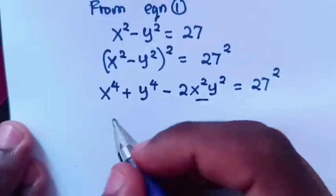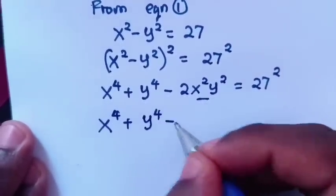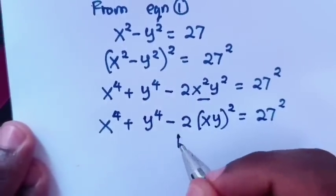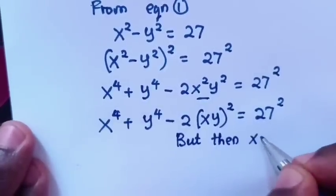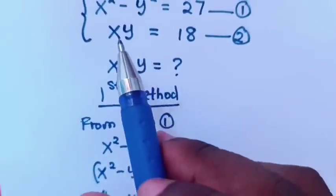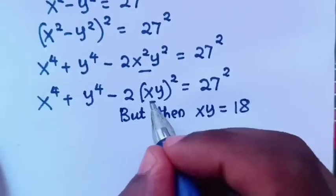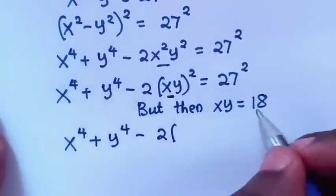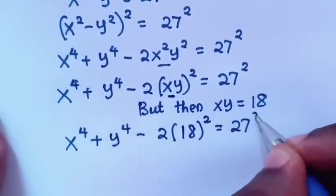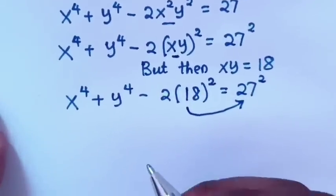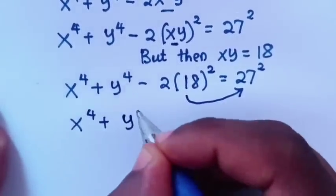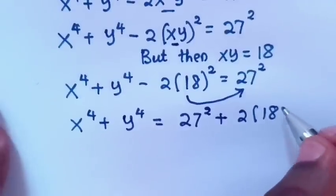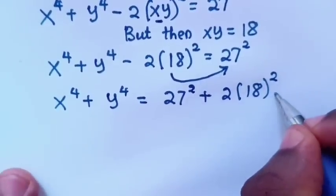Here, x squared and y squared — it will be x to the power 4 plus y to the power 4 minus 2(xy) squared equals 27 squared. But then we know that xy from equation 2 equals 18. So we substitute the value of xy into the equation. It will be x to the power 4 plus y to the power 4 minus 2(18) squared equals 27 squared. We call this equation 3.